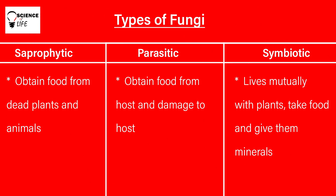Saprophytes are fungi that obtain their nutrition from dead plants and animals. Parasitic fungi obtain their nutrition from the host and completely damage the host. Symbiotic fungi are very friendly — they maintain a mutual relationship with the host, giving benefit to the host as well as taking nutrition from the host. So they are very friendly.